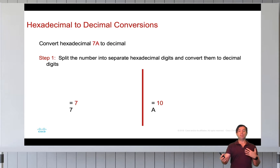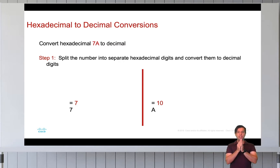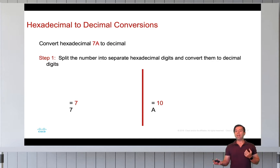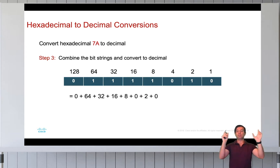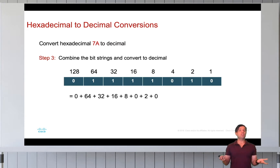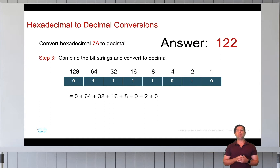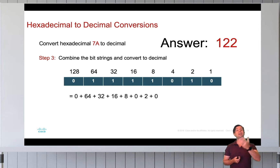To convert hexadecimal to decimal, we simply reverse the process. To convert the hex number 7A to decimal: first split the digits — 7 is 7, but A has a decimal equivalent of 10. In step 2, convert those decimal numbers back into binary. In step 3, combine the separate bit strings back into a complete bit string and do a normal binary-to-decimal conversion, which results in 122. The hexadecimal number 7A is the equivalent of the decimal number 122.